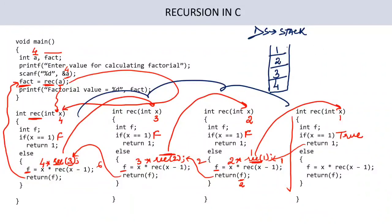Once the base condition is reached, we start popping values: pop 1 and multiply with 2 → 2. Pop 2 and multiply with 3 → 6. Pop 6 and multiply with 4 → 24. So finally the answer becomes 24. The stack is a LIFO (Last In, First Out) data structure — the value which comes in last comes out first.